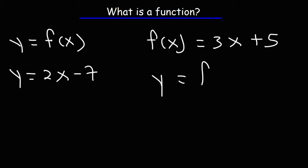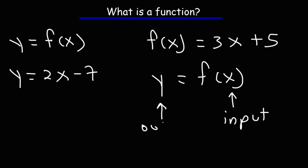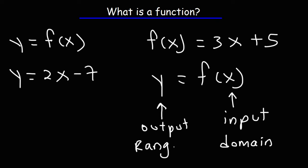Going back to y equals f of x, x is the input of the function and y is the output of the function. In order for this to be a function, for every input there has to be a single output. If you get two outputs for one input, it is not a function — it's a relation. The input represents the domain of the function, whereas the output represents the range of the function.